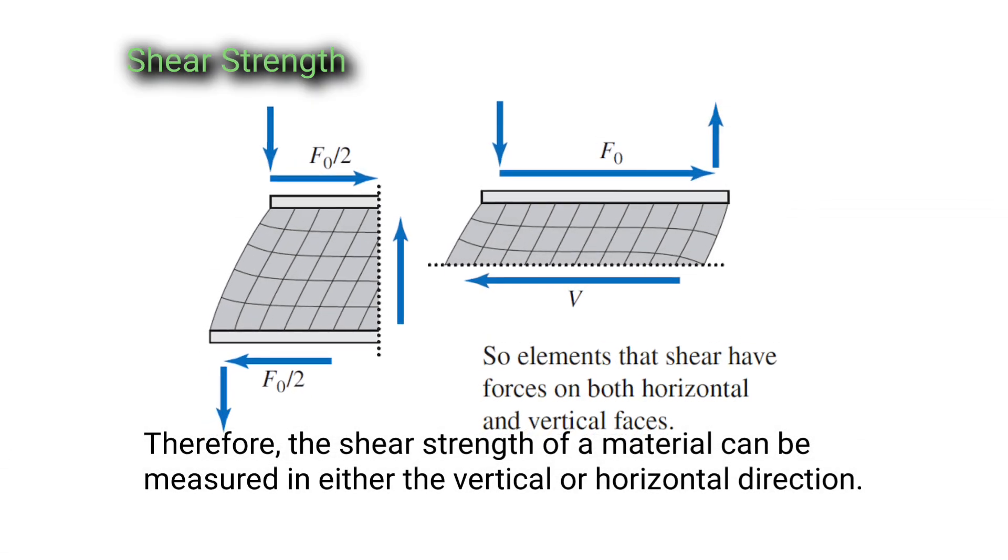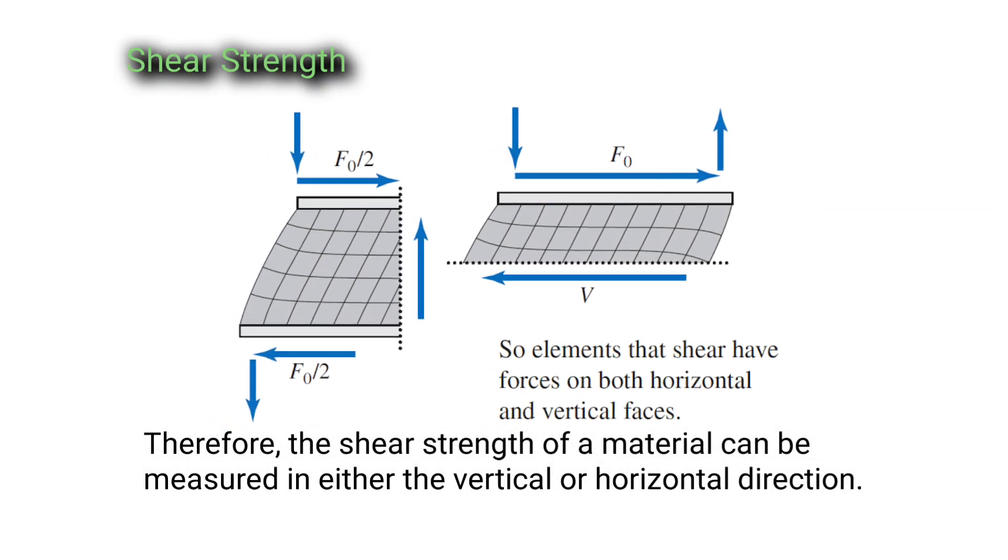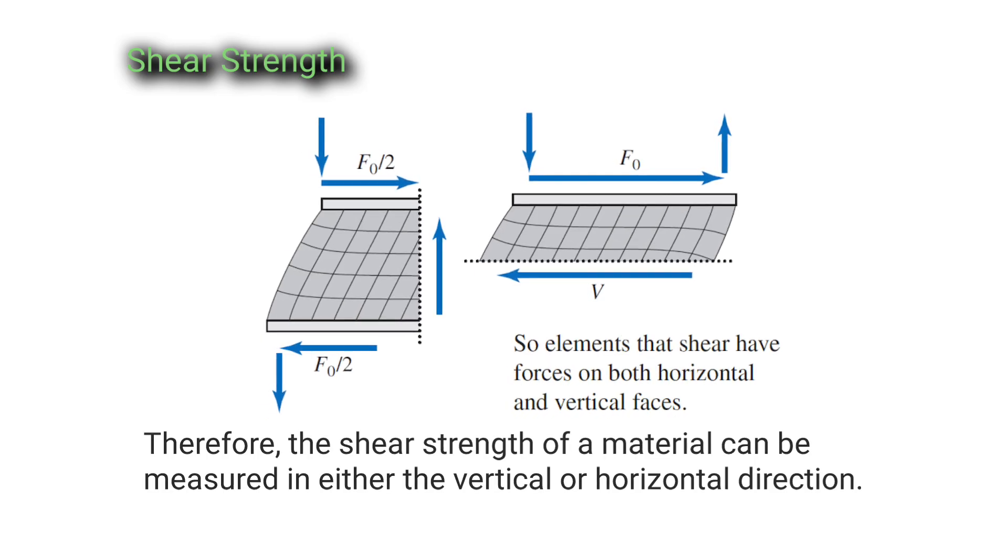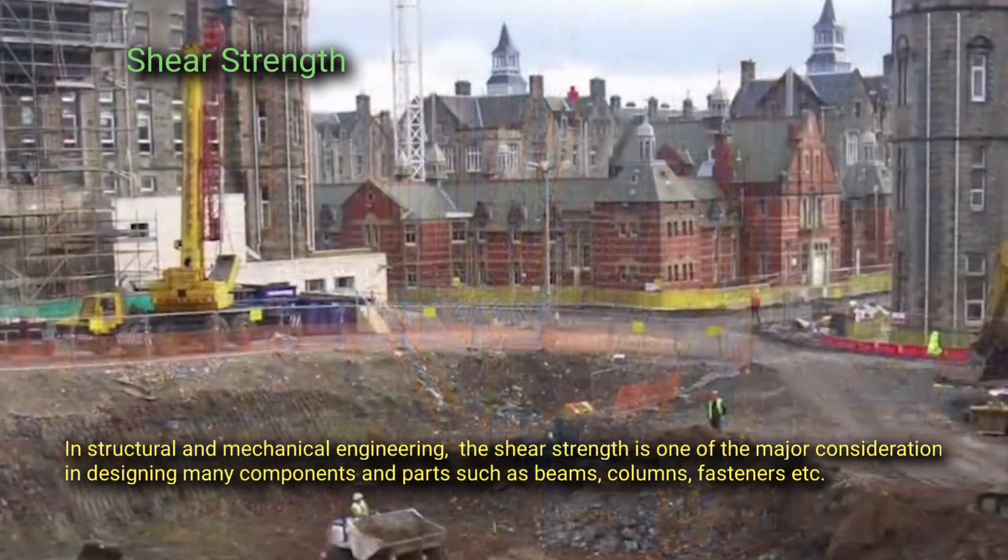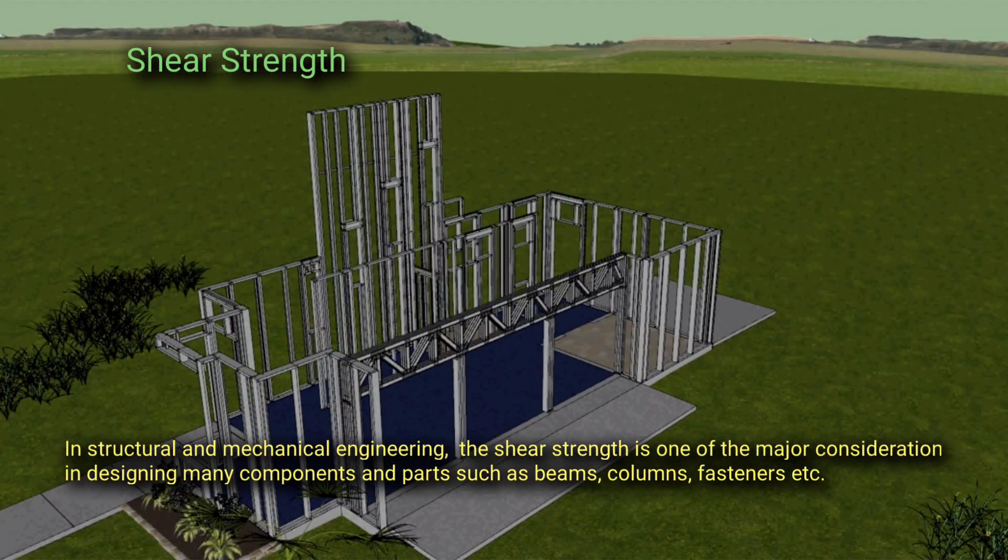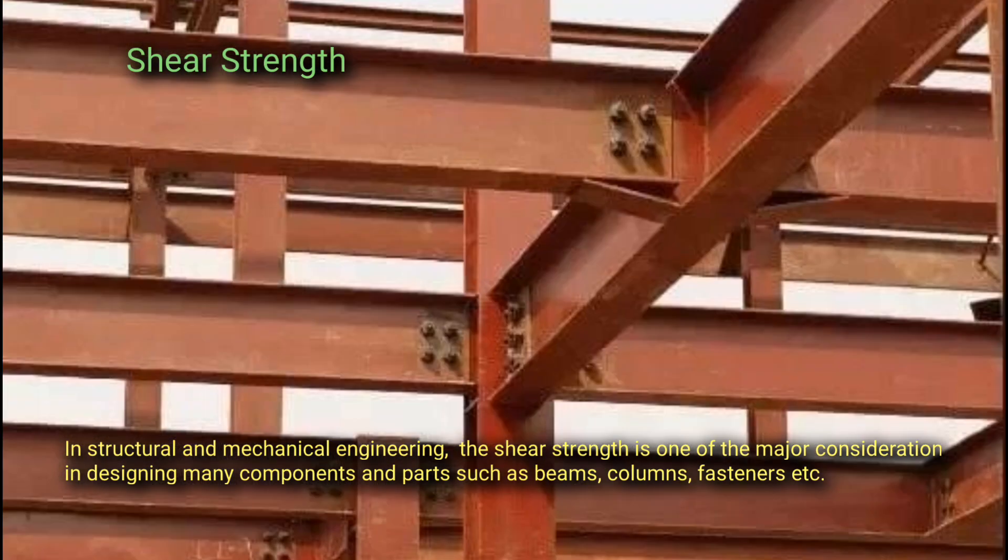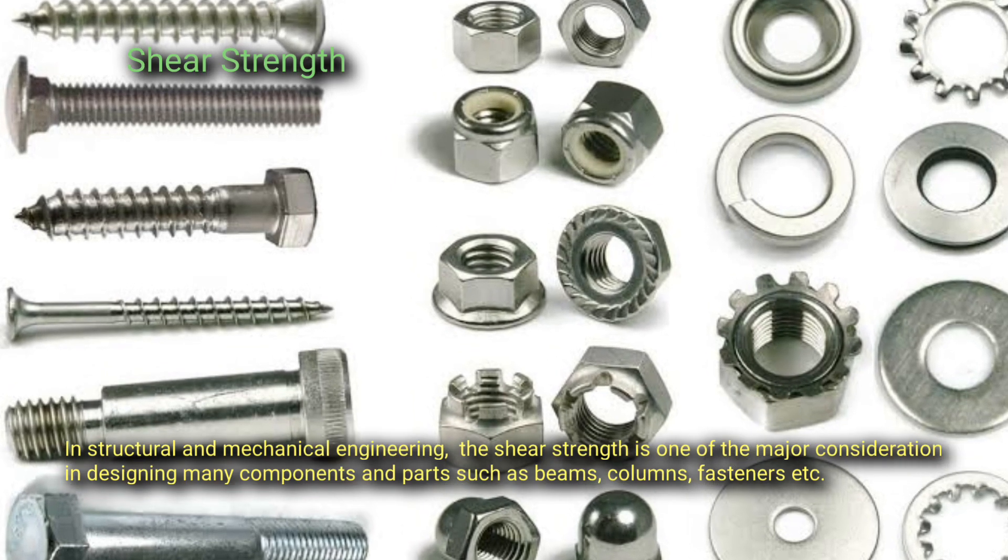Therefore, the shear strength of a material can be measured in either the vertical or horizontal direction. In structural and mechanical engineering, shear strength is one of the major considerations in designing many components and parts such as beams, columns, fasteners, etc.